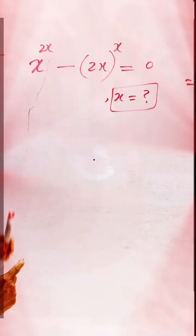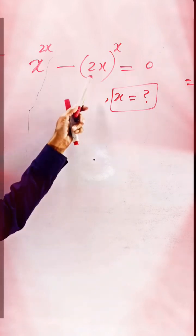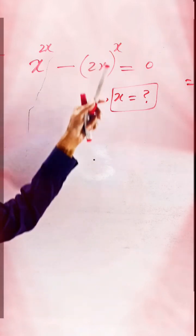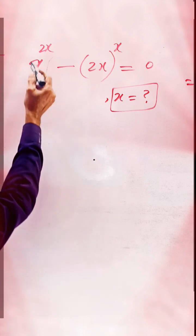Here x is the base and 2x is the exponent, and here 2x is the base and x is the exponent. So we can write according to the rule, this term 2x we can write as x times x plus x, because as we know that x plus x gives us 2x.